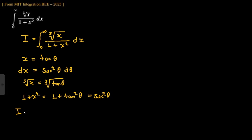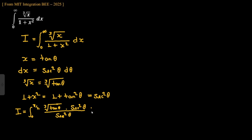Rewriting the integral: I = ∫₀^(π/2) cube root(tan θ) · sec² θ / sec² θ dθ. The sec² θ terms cancel out, giving I = ∫₀^(π/2) cube root(tan θ) dθ.